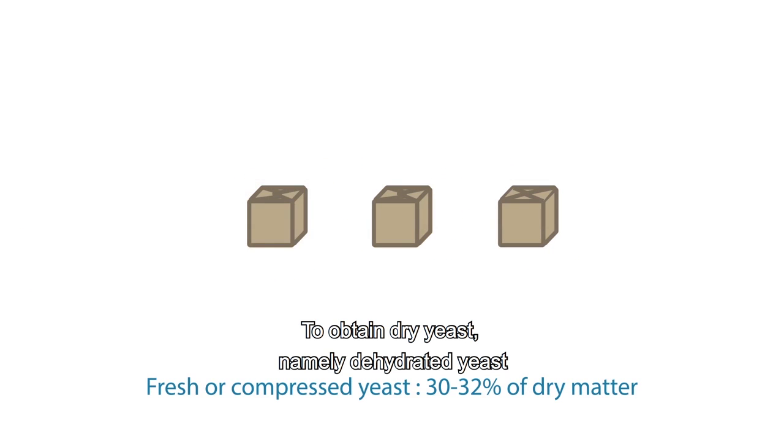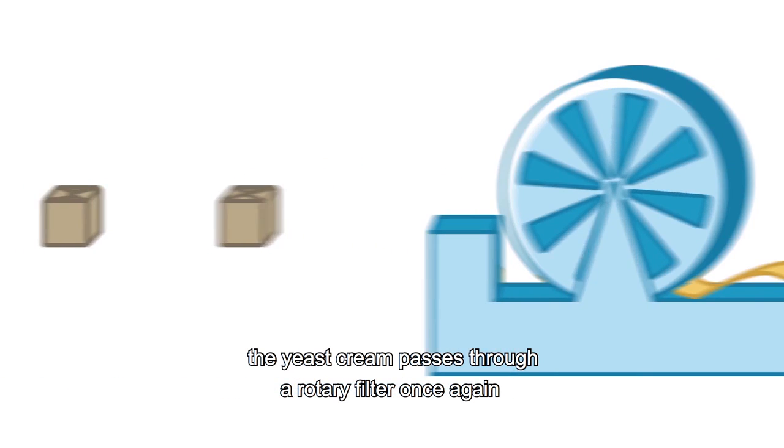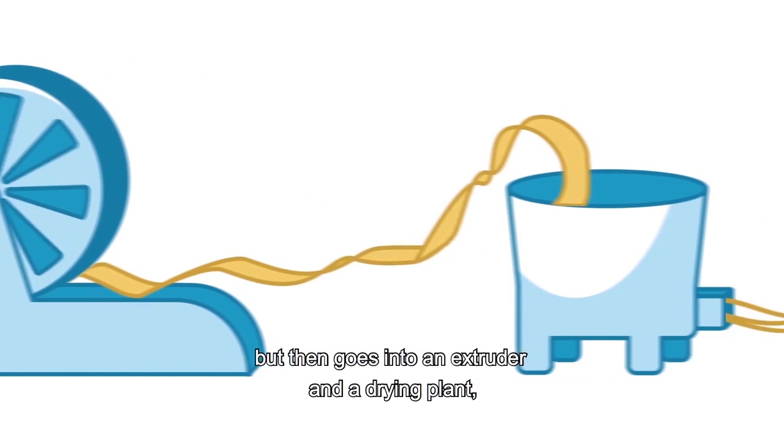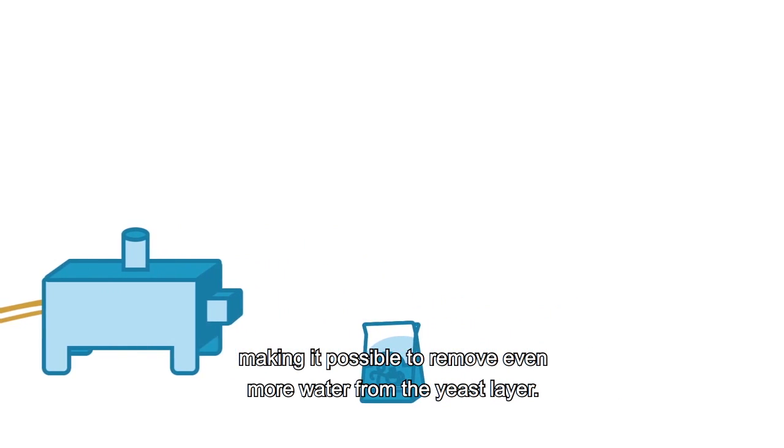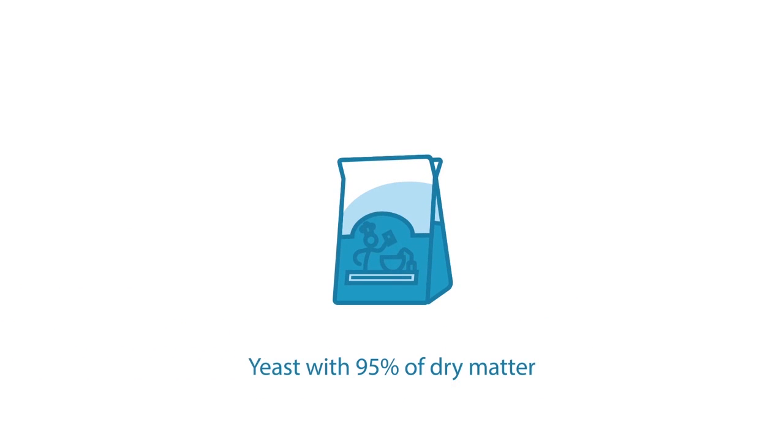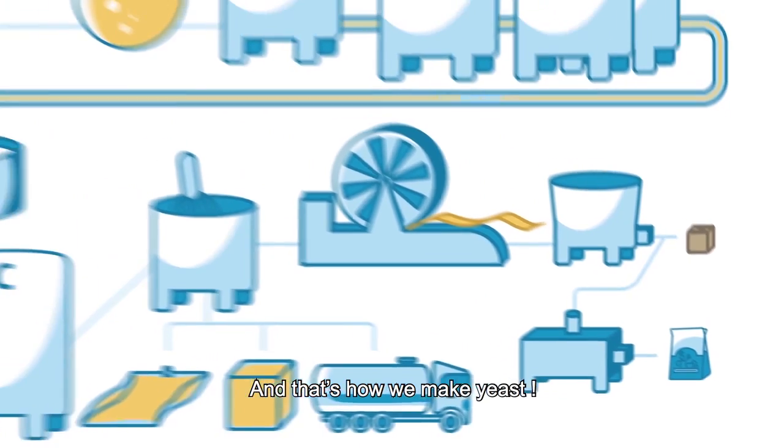To obtain dry yeast, namely dehydrated yeast, the yeast cream passes through a rotary filter once again, but then goes into an extruder and a drying plant, making it possible to remove even more water from the yeast layer. And that's how we make yeast.